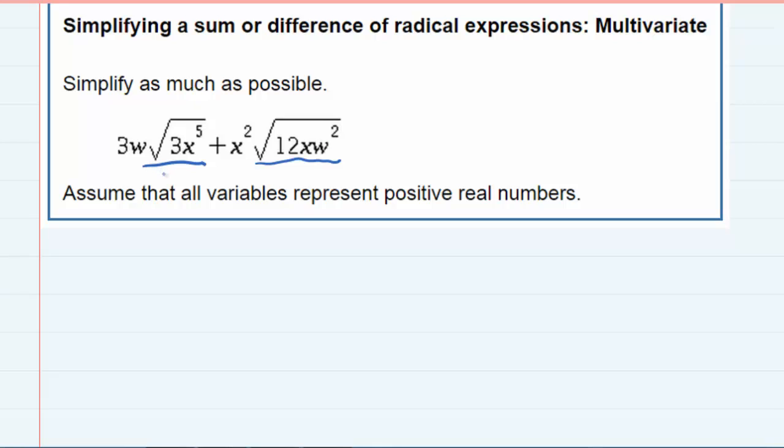So looking at the first one here, the 3x to the fifth, if that x to the fifth were an even exponent, I would be able to divide it by 2 and bring it outside. And although it's not even, I can rewrite that expression as 3w square root of 3x^4, and then the other x.